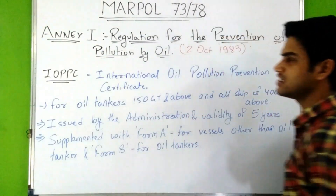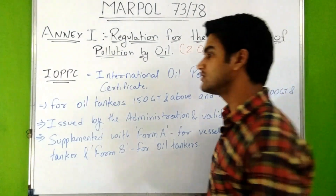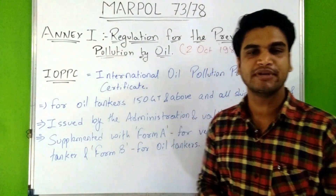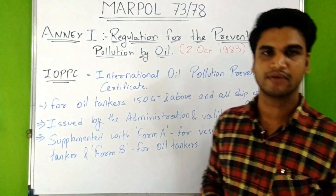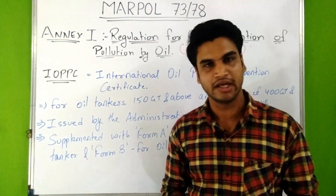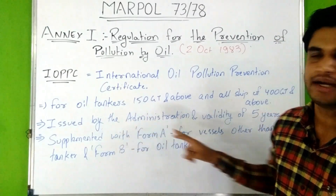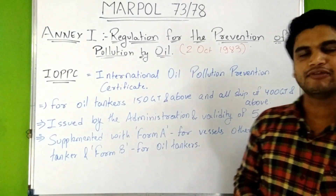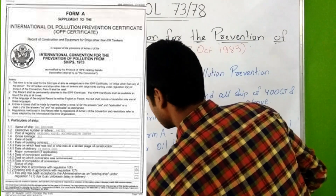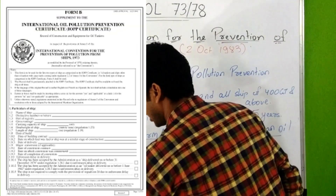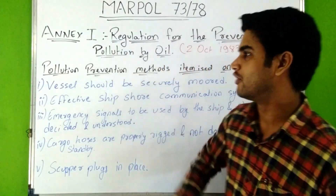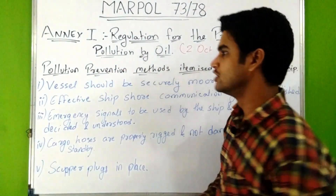IOPPC stands for International Oil Pollution Prevention Certificate. It is issued for oil tankers of 150 gross tonnage and above and all ships of 400 gross tonnage and above. It is issued by the administration and is valid for five years. It is supplemented with Form A for vessels other than oil tankers and Form B for oil tankers.